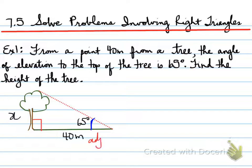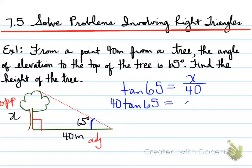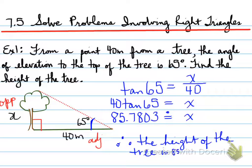What uses opposite and adjacent? Well, that's right, the TOA part of SOH CAH TOA. TOA means tangent of the angle, 65, equals opposite, which is x, over adjacent, which is 40. You do 40 times tan 65, and that equals x. And x equals 85.7803 meters. So that is the height of the tree.